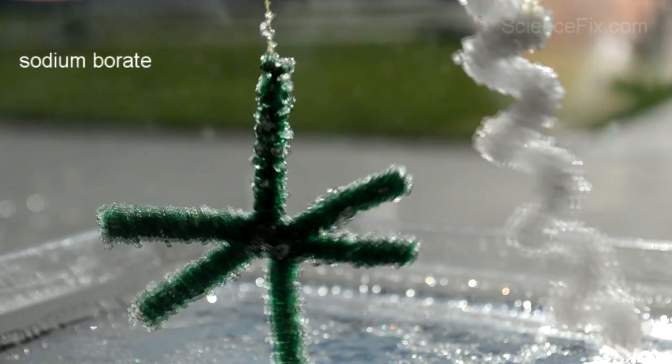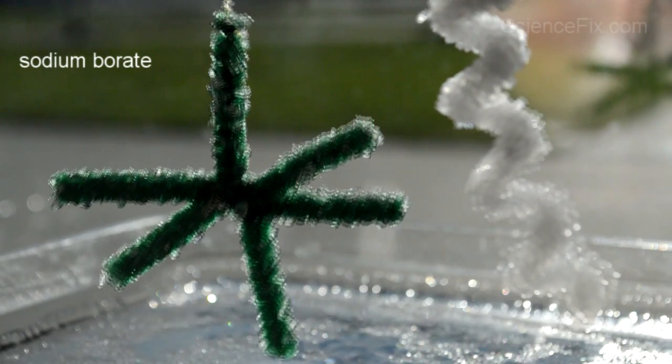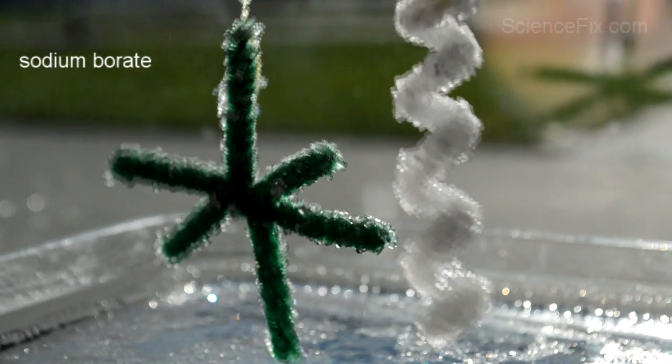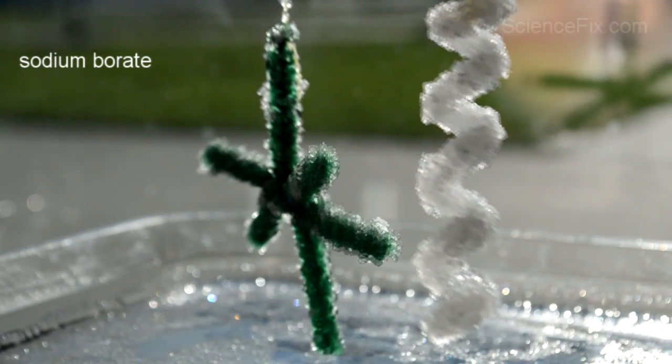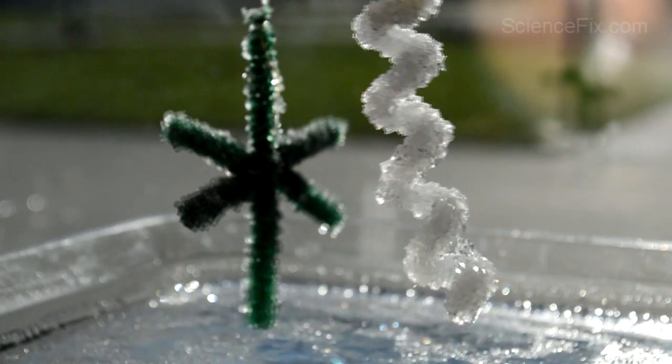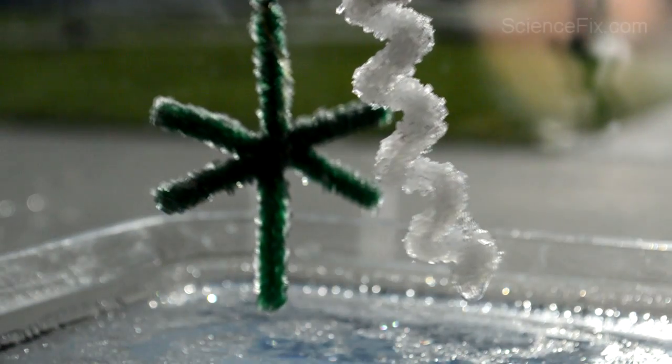But slowly over time, if there's something disturbing the solution, the positive sodium ions and the negative borate ions slowly come together and form in a crystal lattice pattern to form those crystals that you see on those ornaments.